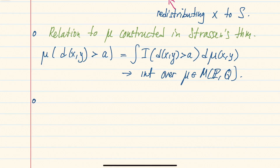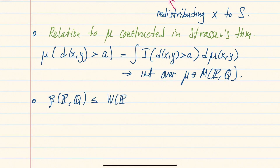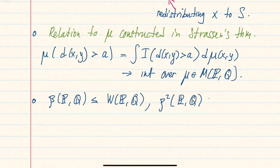Another observation is that one can easily check that the Wasserstein metric dominates both the Lévy-Prokhorov and bounded Lipschitz metrics. We will see in a second that W is bigger than beta (the bounded Lipschitz metric). One of the exercises also asks to show that the Lévy-Prokhorov metric squared is bounded by the W metric.